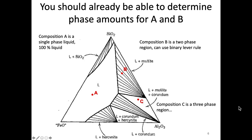Let's start with composition A. Composition A is in the region that we've identified when we construct this isothermal section as being 100% liquid. That's the only phase we see here. Therefore, if I'm at 1600 degrees Celsius anywhere in this region, I should have 100% liquid. This isn't meant to be a trick question — it is just 100% liquid. Just like in binary systems, if you're in a one-phase region, you have 100% of that phase.